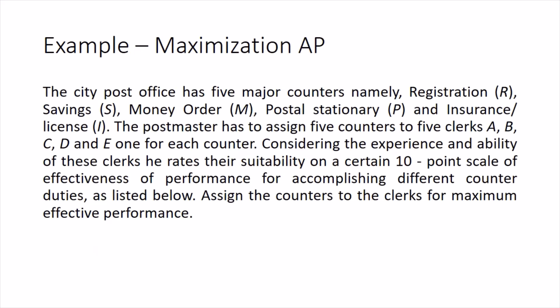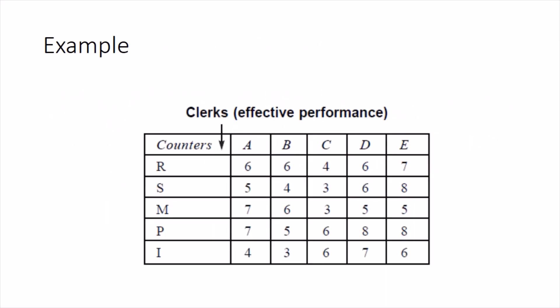I'll explain this with the help of an example. In a city post office, there are five major counters R, S, M, P, I, and five clerks A, B, C, D, E. The data given shows the effectiveness of performance of all the clerks. We have to do the assignment for maximum effective performance — it is very clearly stated in the problem that we have to maximize performance. From the data, performance always needs to be maximized.